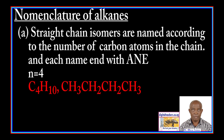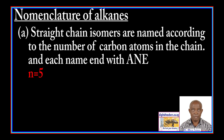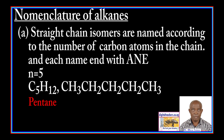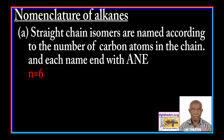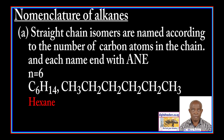When N is 4, the molecular formula is C4H10, the name is butane. When N is 5, the molecular formula is C5H12, the name is pentane. When N is 6, the molecular formula is C6H14, the name is hexane.